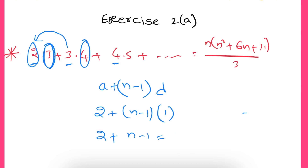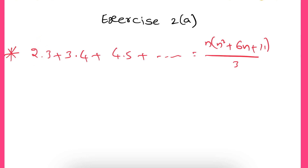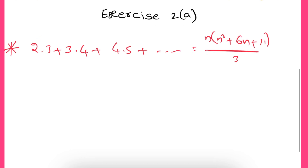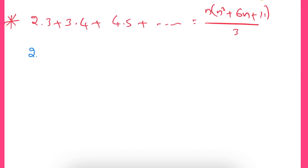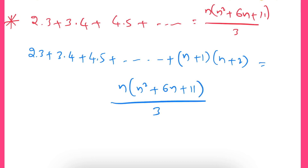Now I'll rewrite the question according to the nth term. So the series becomes: 2×3 + 3×4 + 4×5 + ... + (n+1)(n+2) = n(n² + 6n + 11)/3. Now we need to solve this using three steps completely.